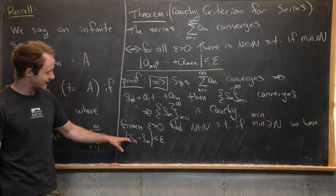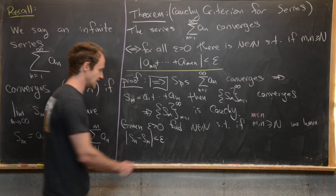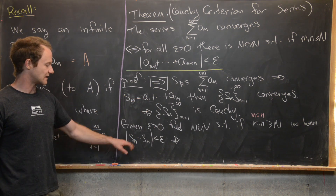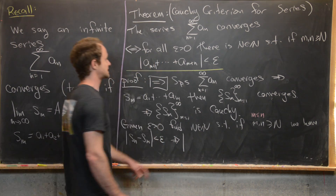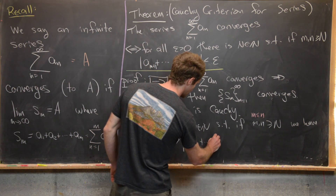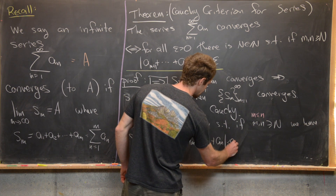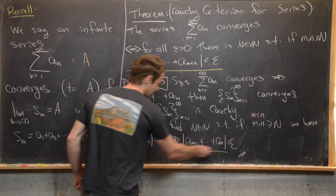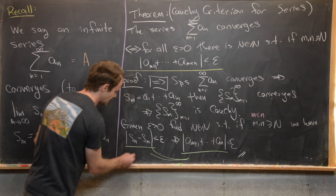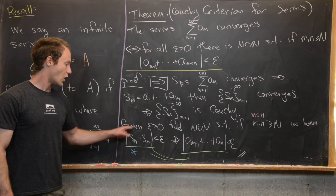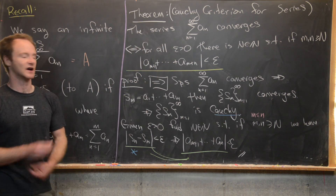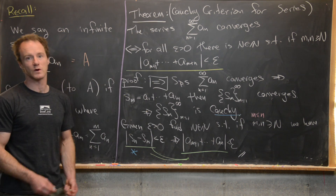Expanding the left-hand side of that inequality, it's not too hard to see that the absolute value of s sub n minus s sub m expands exactly to the absolute value of a sub (m+1) all the way up to a sub n, which is less than epsilon. The two expressions are equal to each other — the first inequality holds because of the Cauchy property of our sequence of partial sums, and the second is our goal. This completes the forward direction.